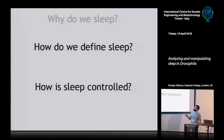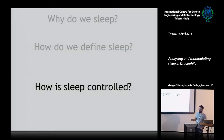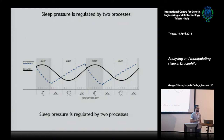If yesterday we talked about the basic question and the first step to address this question — which is to define sleep — today we focus instead on how sleep is controlled. We do know a fair bit about how sleep is controlled; at least we have a very well accepted theoretical model, and this is what we call the two-process model.